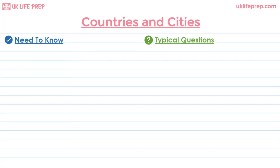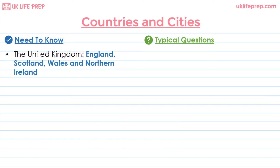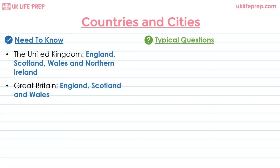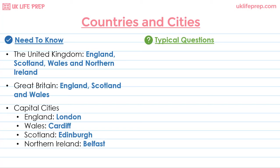Questions on countries and cities of the UK are also extremely common. The United Kingdom is made up of four countries: England, Scotland, Wales, and Northern Ireland. Great Britain specifically refers to England, Scotland, and Wales. The capital cities are London, the capital of England; Cardiff, the capital of Wales; Edinburgh, the capital of Scotland; and Belfast, the capital of Northern Ireland.